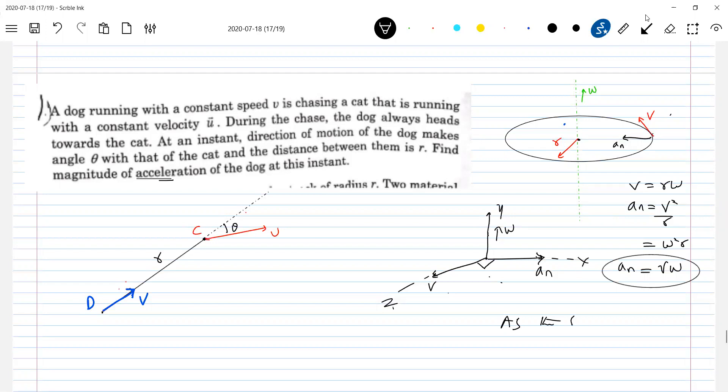The speed of dog and cat are constant. So no tangential acceleration. But is the direction varying? Yes. Continuously what happens as the cat moves, the velocity of the dog also will be directed towards C. So it will rotate. So therefore there's a change in direction of motion. So there's relative motion. So because of that, there is a centripetal acceleration.